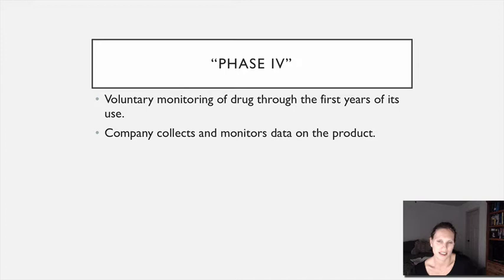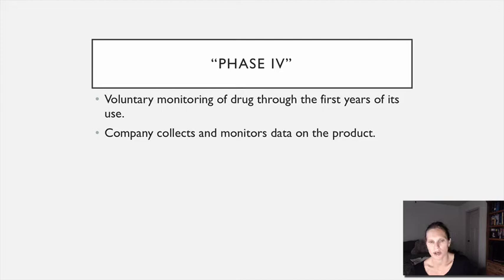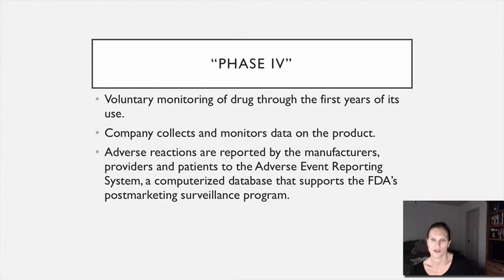During post-marketing surveillance, the drug is monitored for efficacy and more importantly safety — looking for adverse drug reactions. There's a challenge here because if something seems to be going wrong with the drug, what's supposed to happen is the prescriber, patient, or healthcare provider contacts the company. The company then collects and monitors this data and, if sufficiently worrisome, is supposed to report it to the FDA and potentially get the drug taken off the market. There's an inherent conflict of interest involved.